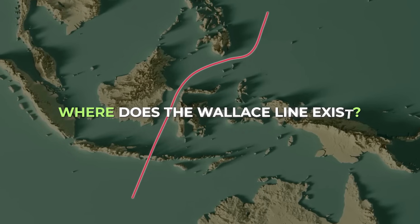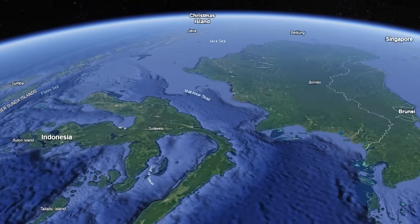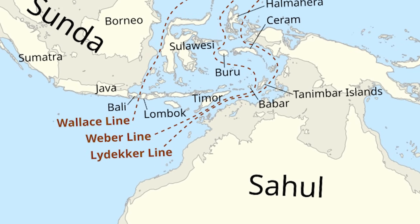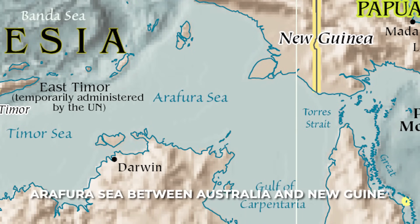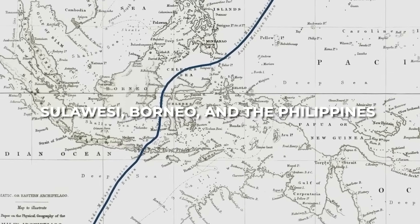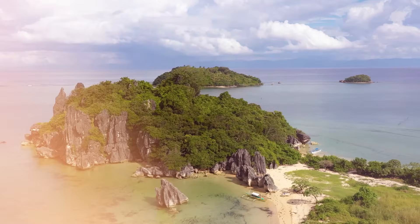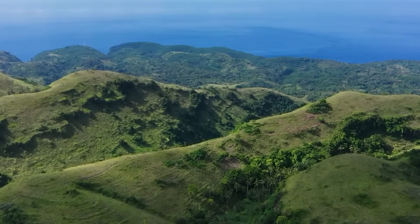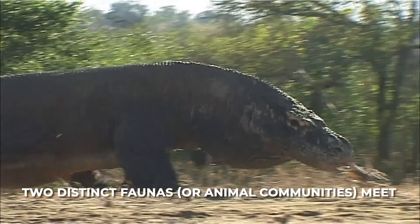The Wallace Line runs through the Malay Archipelago, a group of islands located between Southeast Asia and Australia. This line roughly divides the islands of Bali and Lombok, just east of Bali in Indonesia. The line continues, stretching from the Arafura Sea between Australia and New Guinea, through the islands of Sulawesi, Borneo and the Philippines, and all the way to the north coast of Australia. Fascinatingly, this invisible line doesn't follow any obvious geographic feature like a mountain range or river — instead, it is an ecological boundary where two distinct faunas, or animal communities, meet.